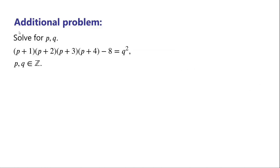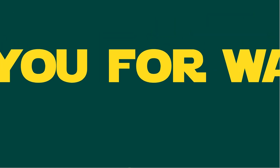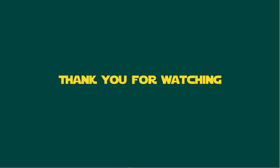Now we have an additional problem. Solve for p and q integers: p times (p plus 2) times (p plus 3) times (p plus 4) minus 8 equals q squared.